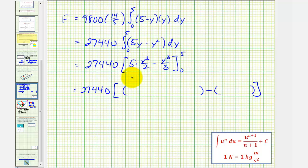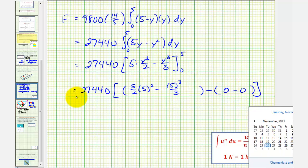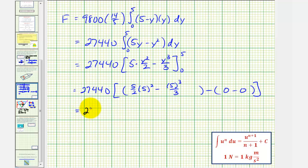So we have 5 times y² divided by 2 minus y³ divided by 3. So when y is five, here we'd have (5/2) times 5² minus 5³ divided by 3. And notice when y is zero, both terms would be zero. So we have 27,440 times 125/2 minus 125/3.